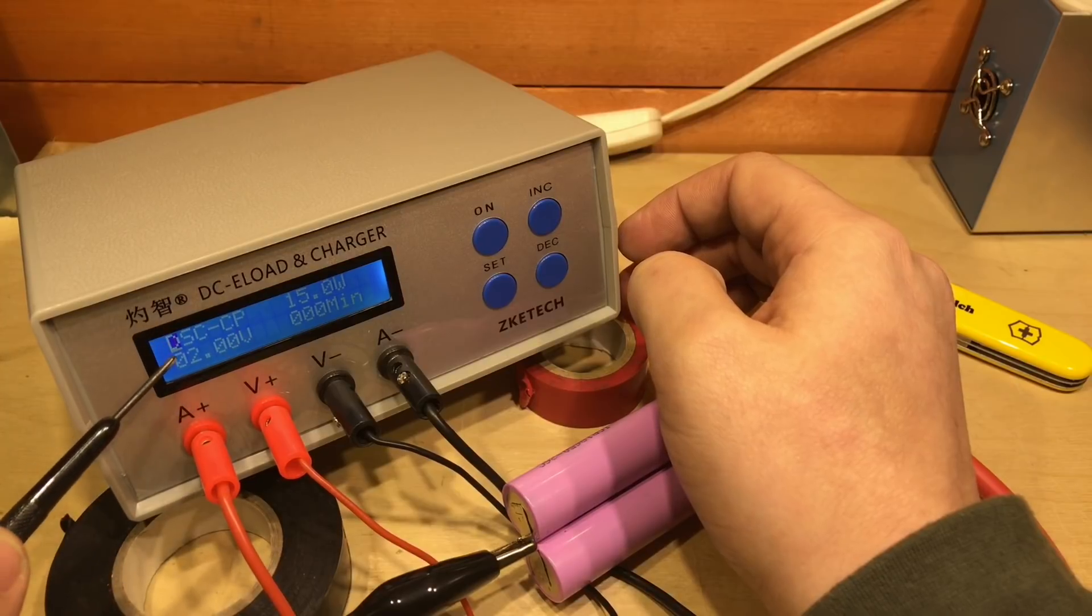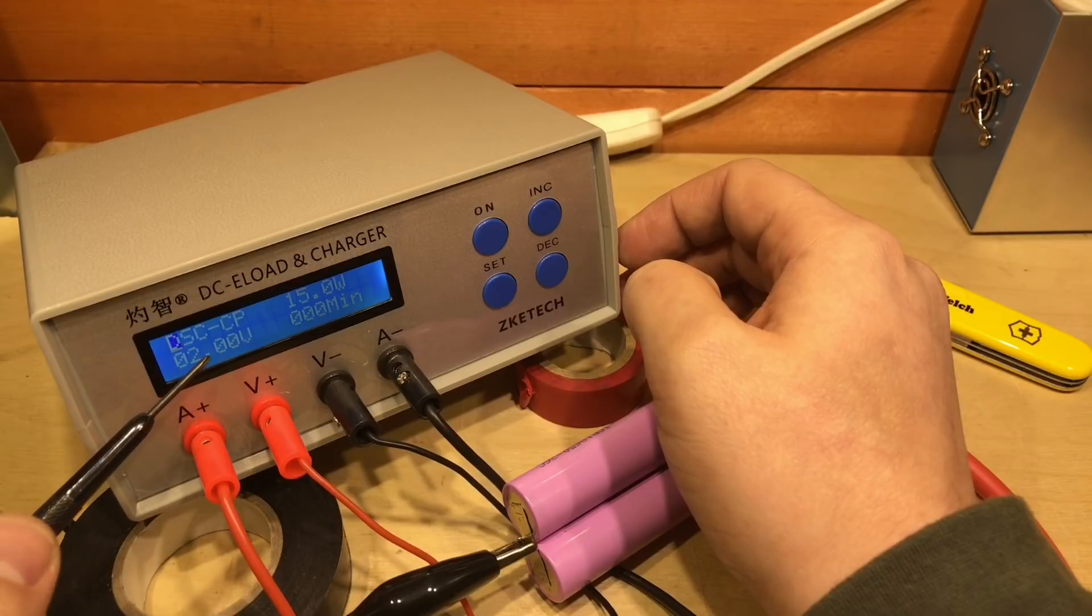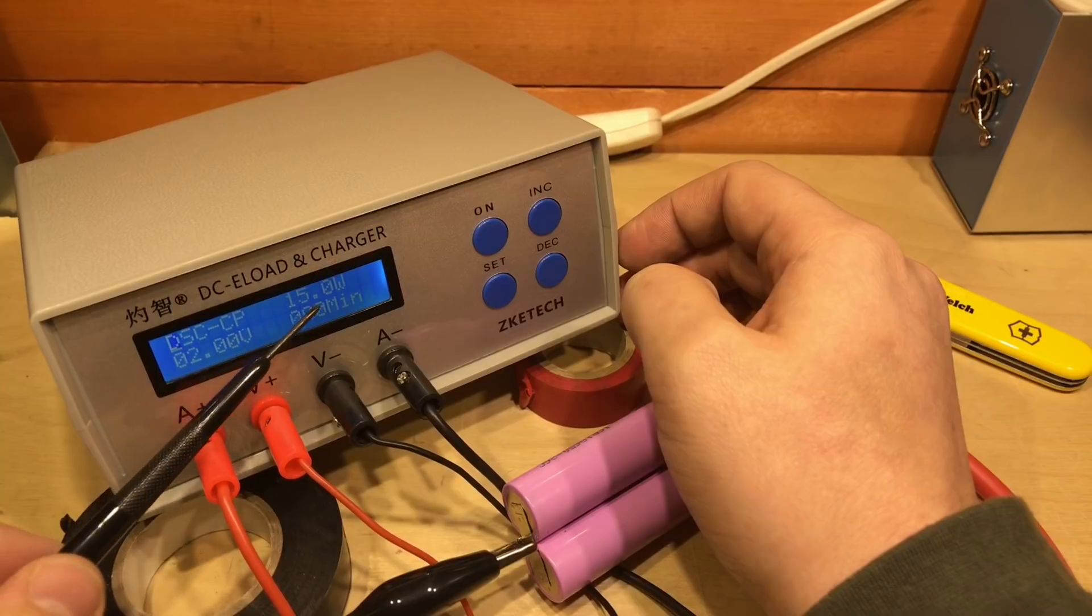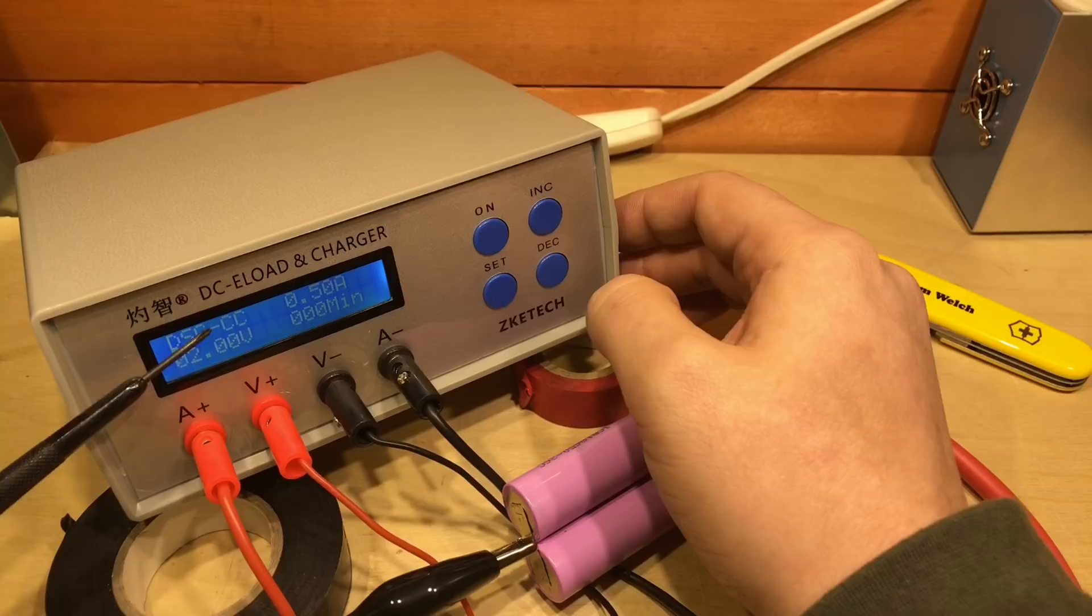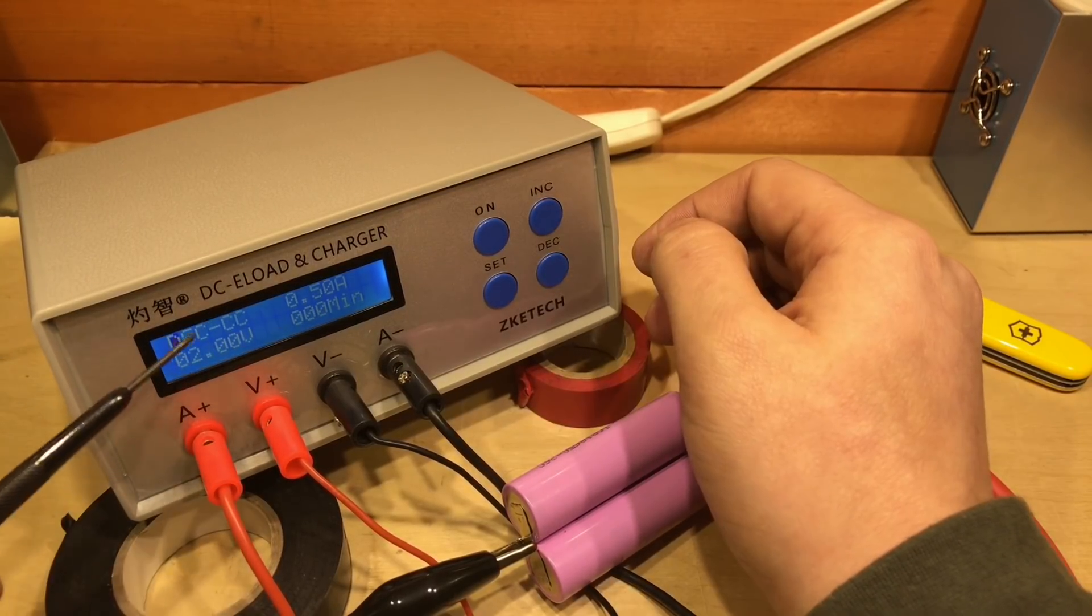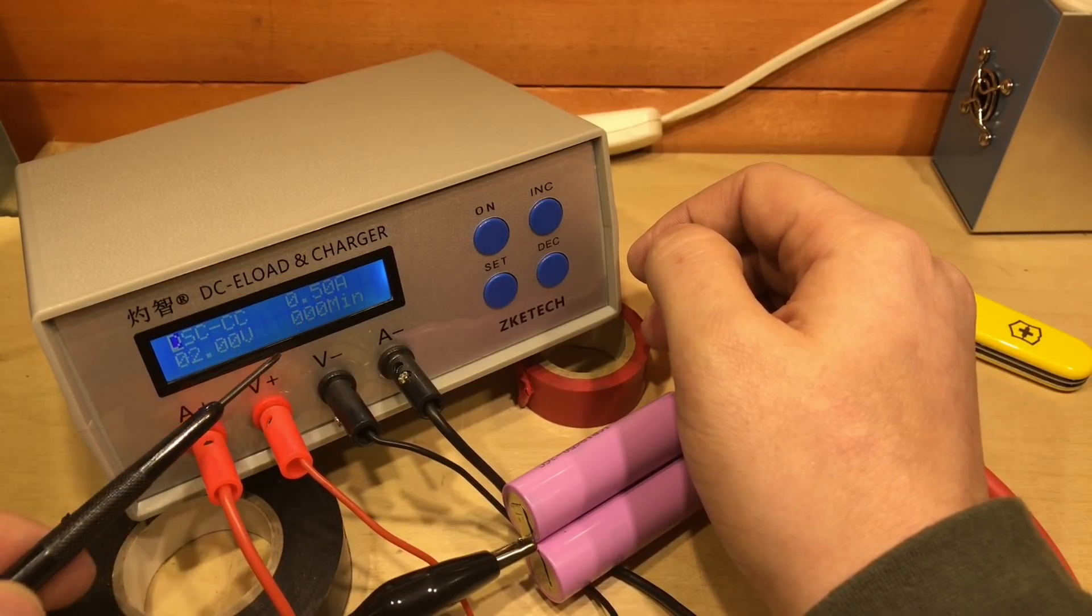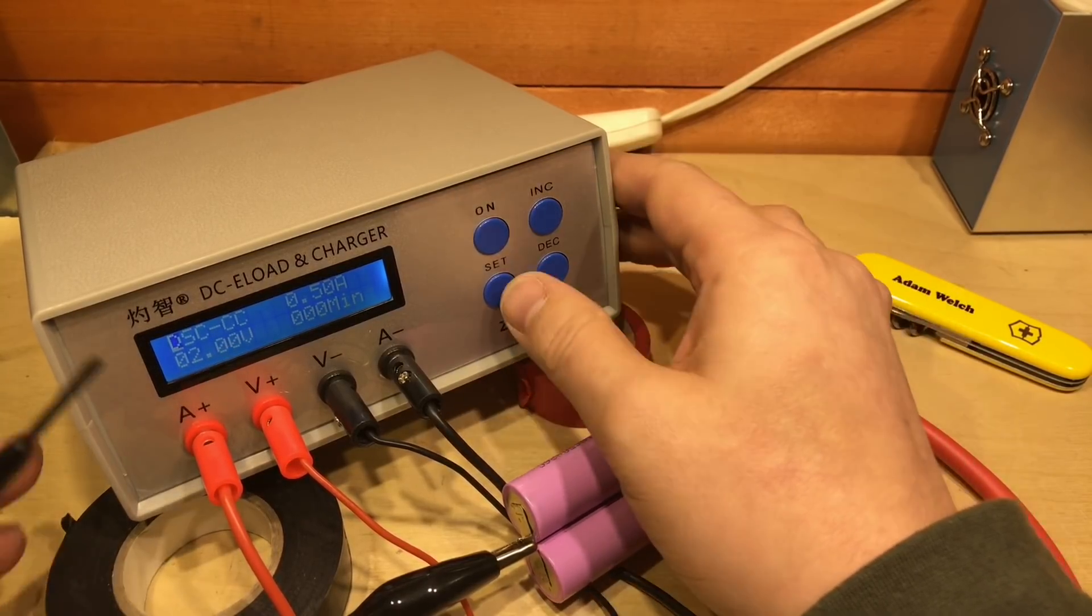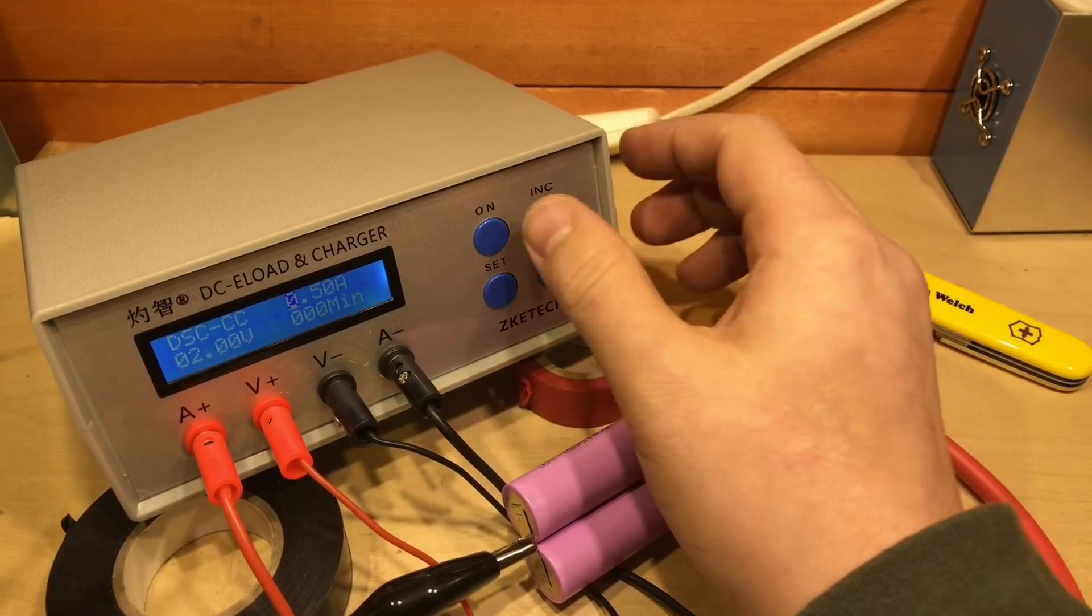Then we go into the DC load here, and the DC CP, that's constant power load, and this is currently showing up as 15 watts. We can change to constant current, CC. And there is just a meter. Now as you can see here, the DC constant current load is set to half an amp, and this shows that it's going to cut off at 2 volts.